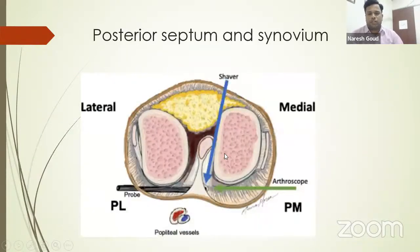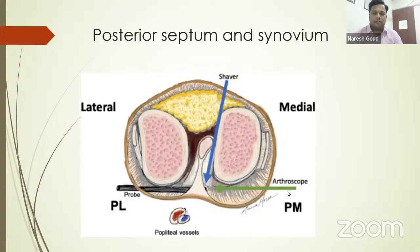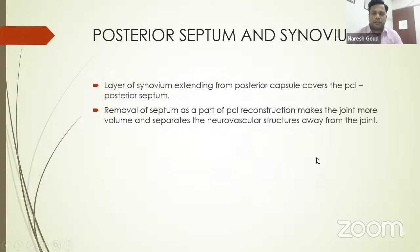The posterior septum is an extension of the posterior synovium — a loose structure filled with fat, connecting the posterior synovium to the PCL. The middle genicular artery enters through the top of the posterior septum and supplies the PCL. Near the tibial attachment, the popliteal vessels are also nearby, attached to the posterior tibia via a fibrous band from the soleus. Releasing the posterior septum during PCL reconstruction increases volume in the posterior space, separating neurovascular structures away from the joint and enabling easier passage of guide pins.